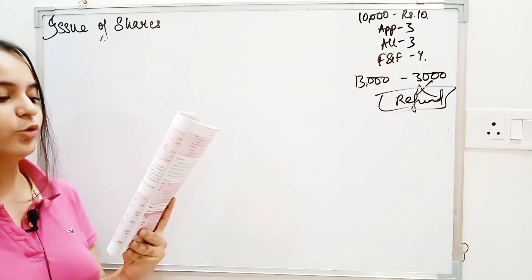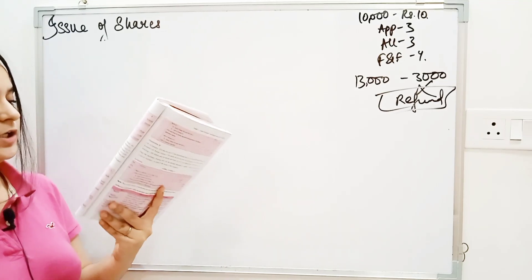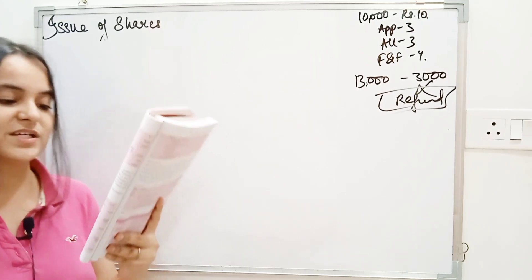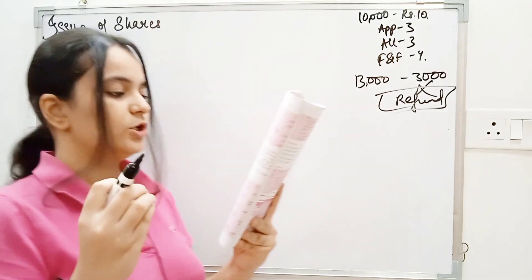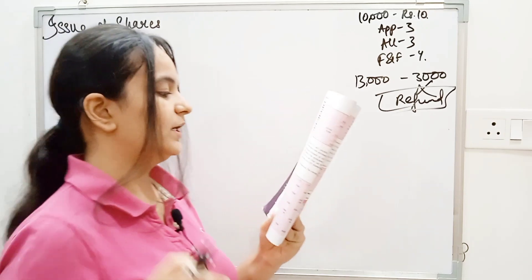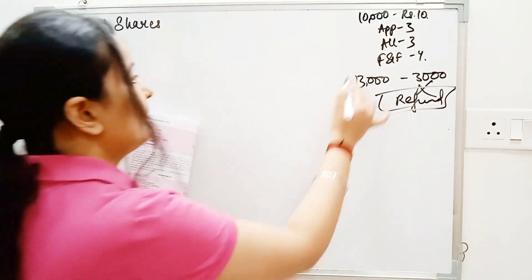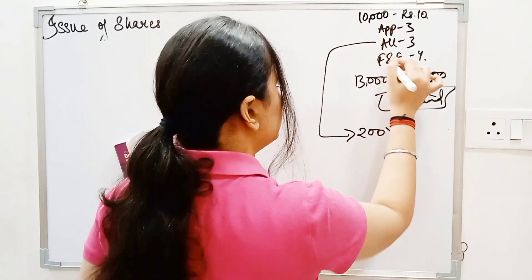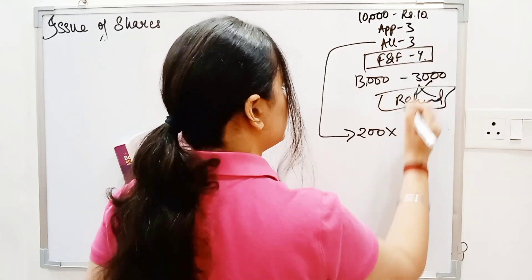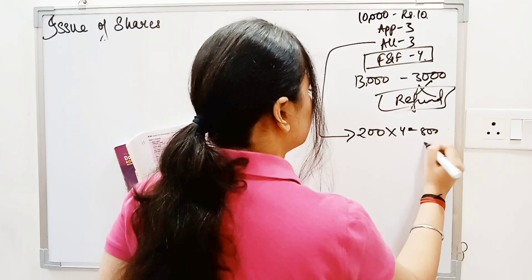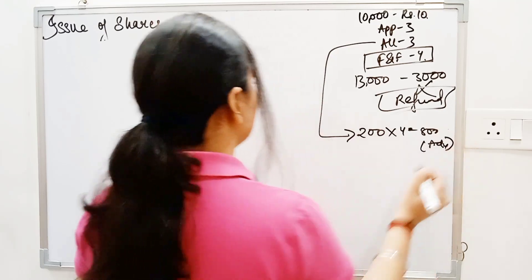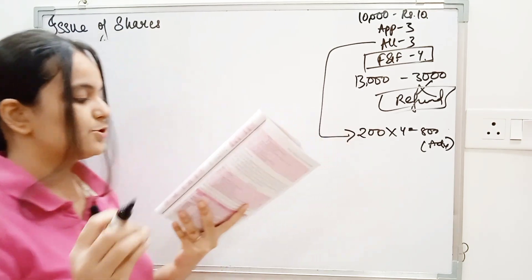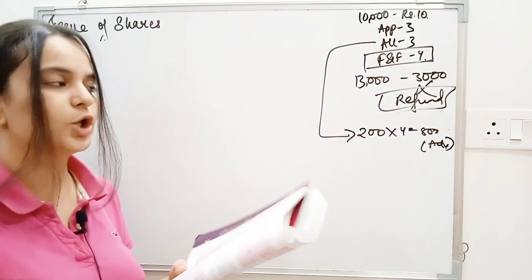Then, one shareholder who was allotted 200 shares paid the first and final call along with the allotment money. So at allotment money time, one shareholder holding 200 shares paid in advance with the first and final call. And another shareholder who did not pay the allotment money on his 300 shares paid it with the first and final call.